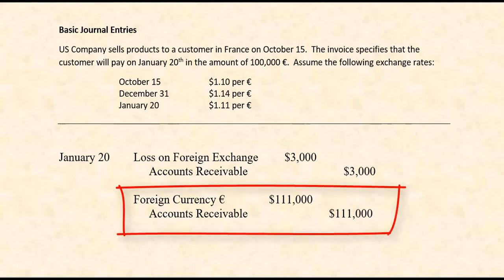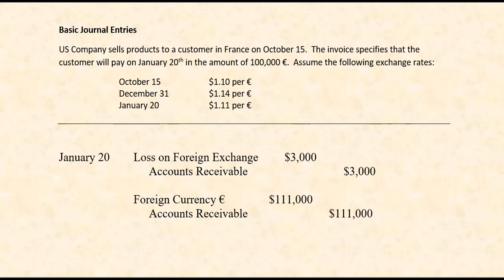We recorded the $3,000 of foreign exchange loss. Now we record the receipt of payment from the customer. Notice I didn't debit cash because cash would refer to U.S. money — that's not what they sent us, they sent us euros. So first I debit foreign currency — euros — $111,000. In a simple exercise like this, you would assume the U.S. company does not have any reason to hold euros and that what they need is U.S. money. So we'll assume they immediately went to the bank and converted the euros into U.S. money. My last journal entry is a debit to cash to represent U.S. money and a credit to foreign currency — euros — for $111,000, to show that the euros received are now gone and converted into U.S. money.